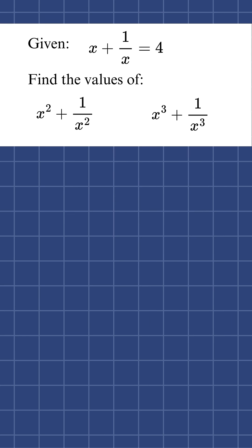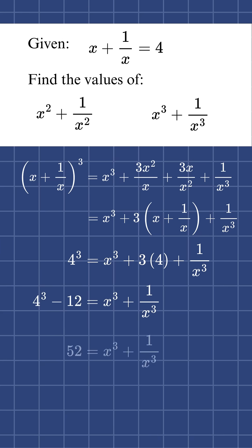And for the cubed version, I do something similar with the cubed identity. And substituting in what I know into that gets me x to the third power plus 1 over x to the third power equals 52.